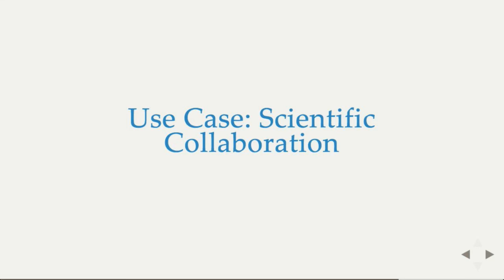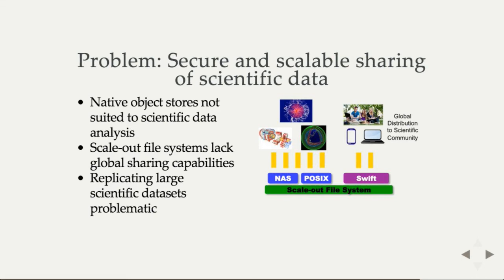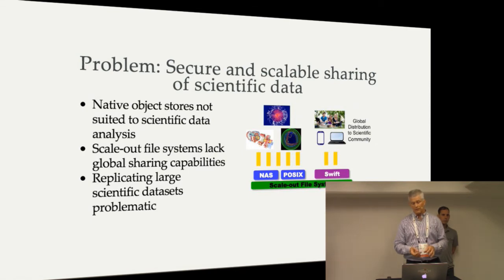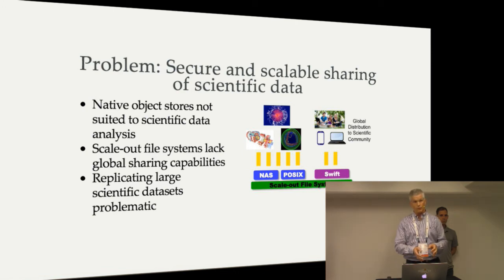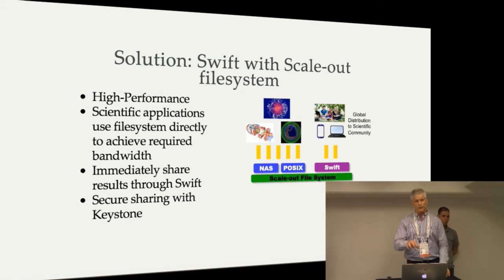A third use case is scientific collaboration. The idea is that you're ingesting objects through the file interface and then publishing them through the object interface. Many corporations and universities have file-based analytics programs processing huge amounts of data. When they're done processing, they want to publish some or all of that data to external consumers. With Swift on File, you can continue running analytics using the file system interface, but then publish the results as a URL through the object interface, immediately share those results with others outside the organization, and secure that with an authentication system like Keystone.